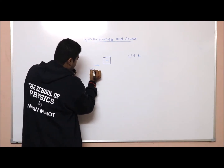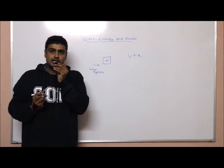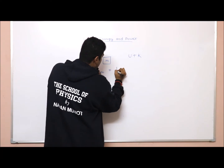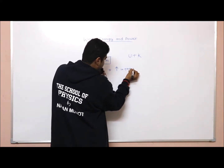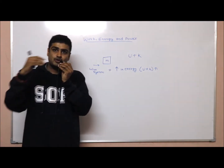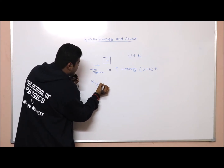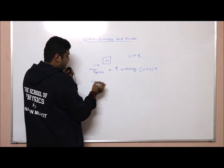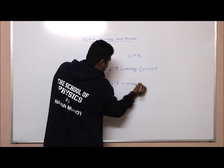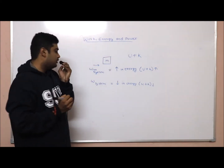If I do work on the system, it will increase the energy of the system. So work done on the system equals the increase in energy, which is the increase in potential energy plus kinetic energy. Conversely, if the system is doing the work, that work done by the system will decrease the energy — the decrease in potential energy plus kinetic energy equals the work done by the system.